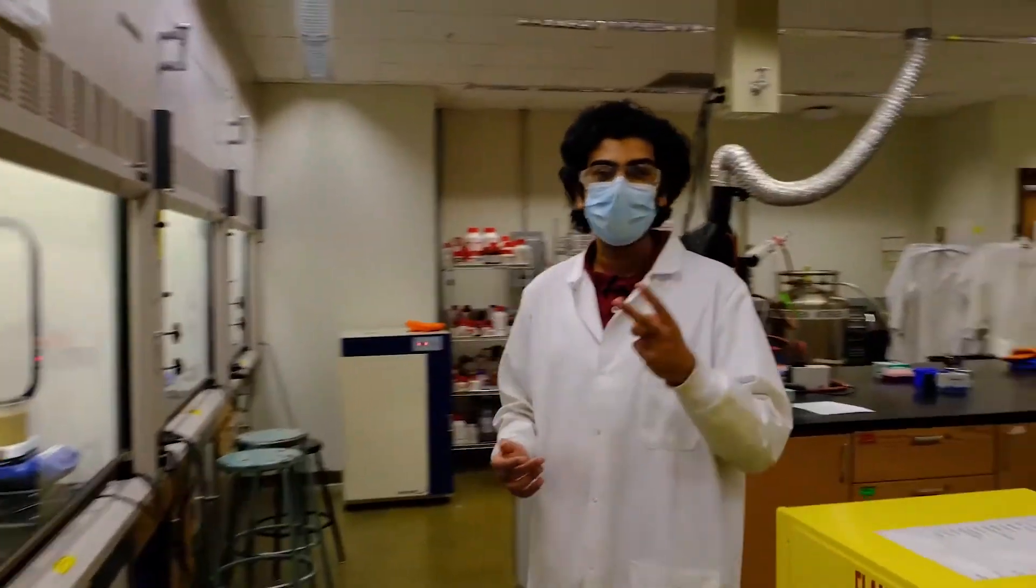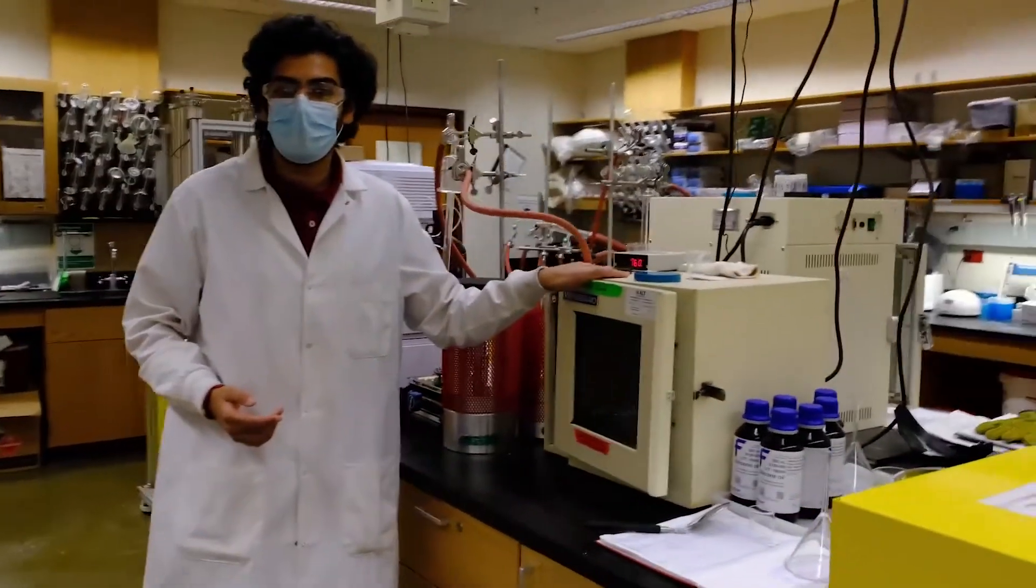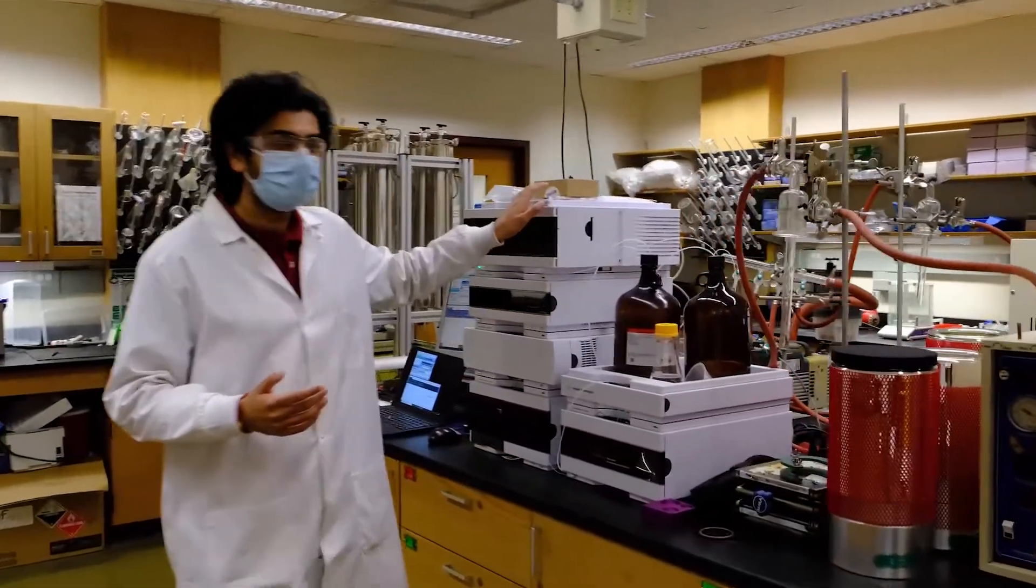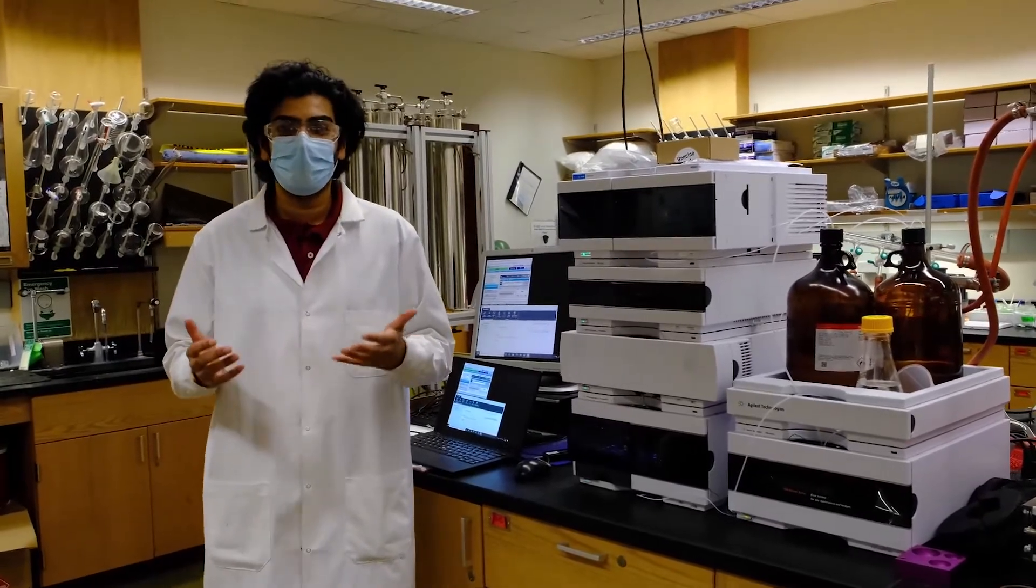Additionally we have two vacuum ovens where we are able to completely dry our polymer samples. After completely drying our polymer samples we then utilize a size exclusion chromatography system for determining the molecular weights of these polymers.